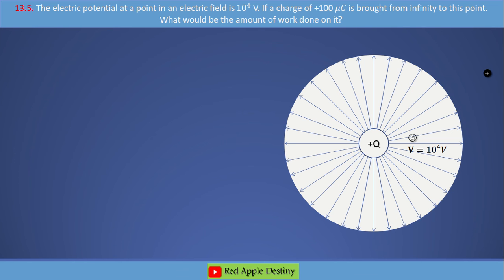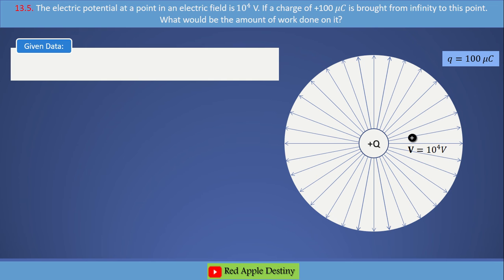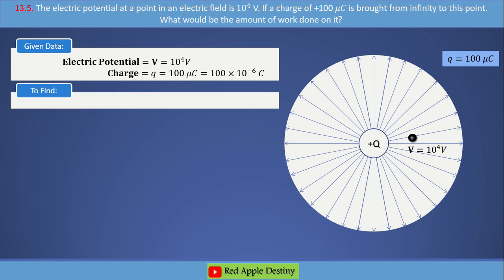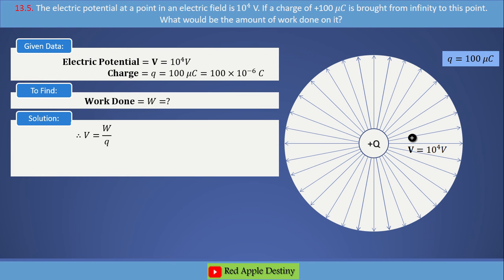Given data: V equals 10⁴ volts, and charge Q equals 100 microcoulombs, which is 100 × 10⁻⁶ coulombs. To find the work done, we use the solution: V equals W by Q, so W equals QV. Putting in the values, we get 1 joule as the result.